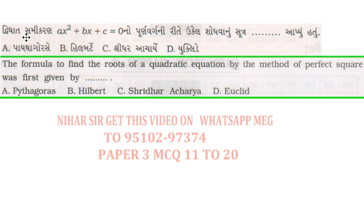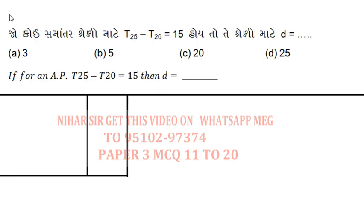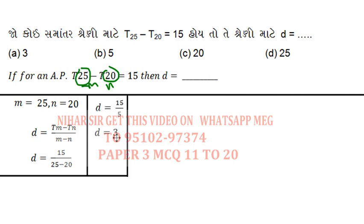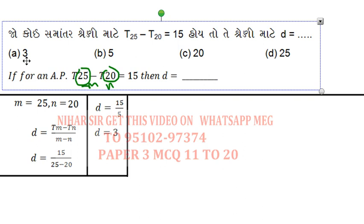You will find this in the theory. The answer is using Sridharacharya. This is to find the value of d, and the formula we have is (tm - tn)/(m - n), where the bigger number is m and this is n. Here 15 is tm minus tn, but this is 25 minus 20, so that's 3. The correct answer is A, 3.